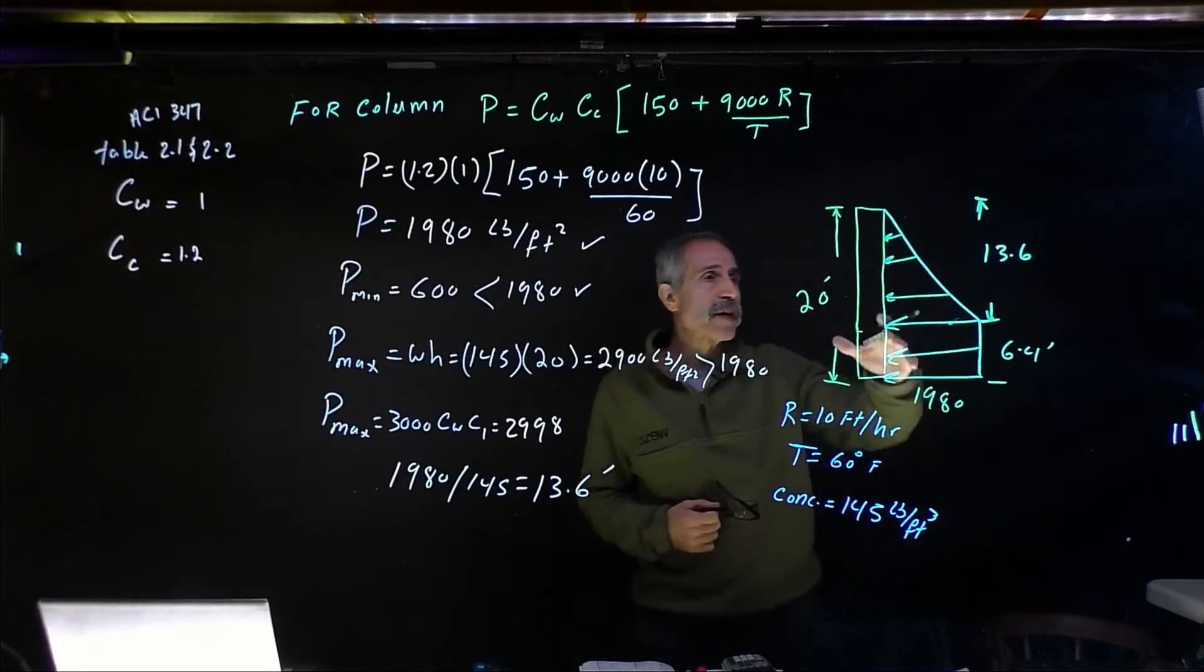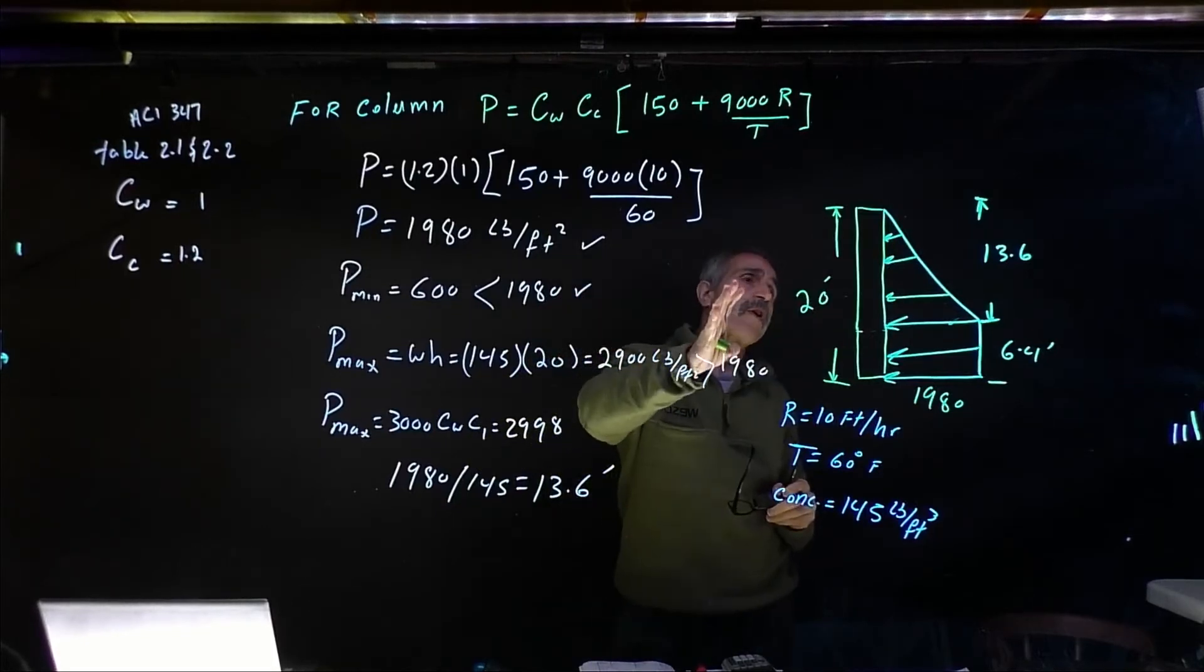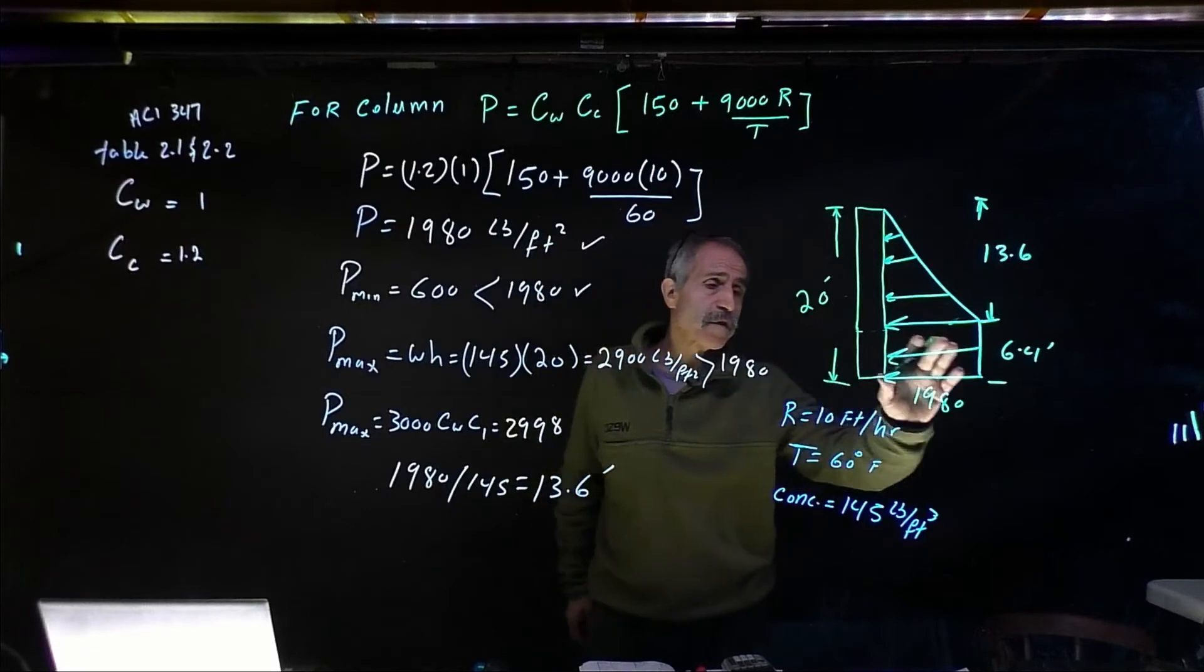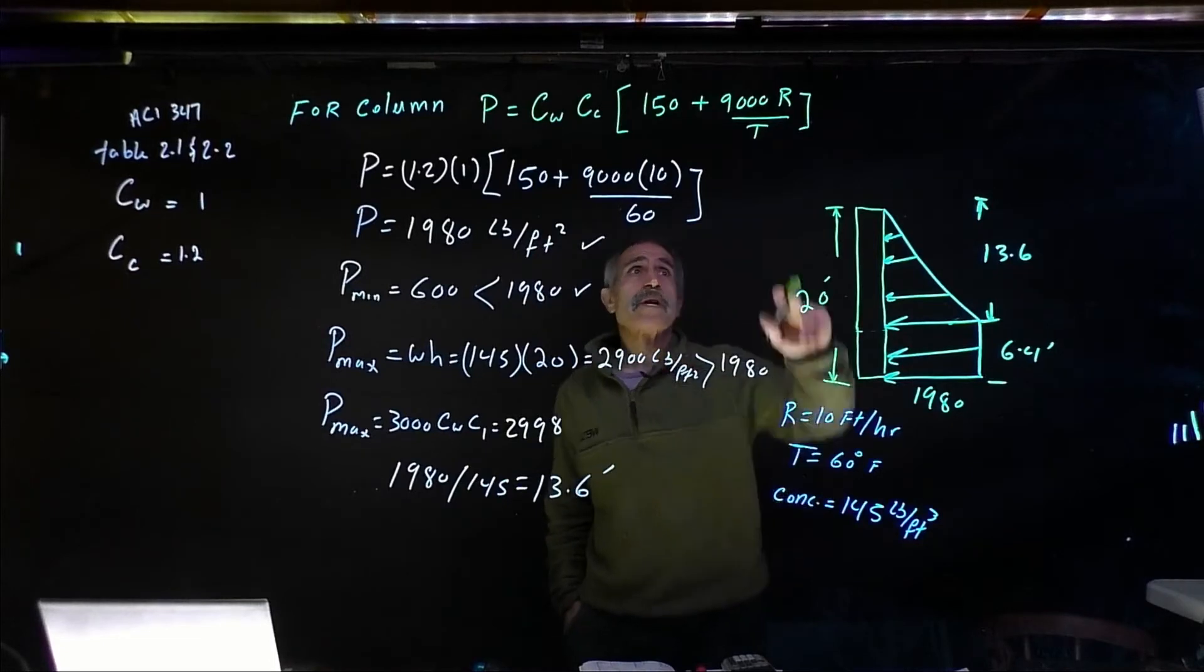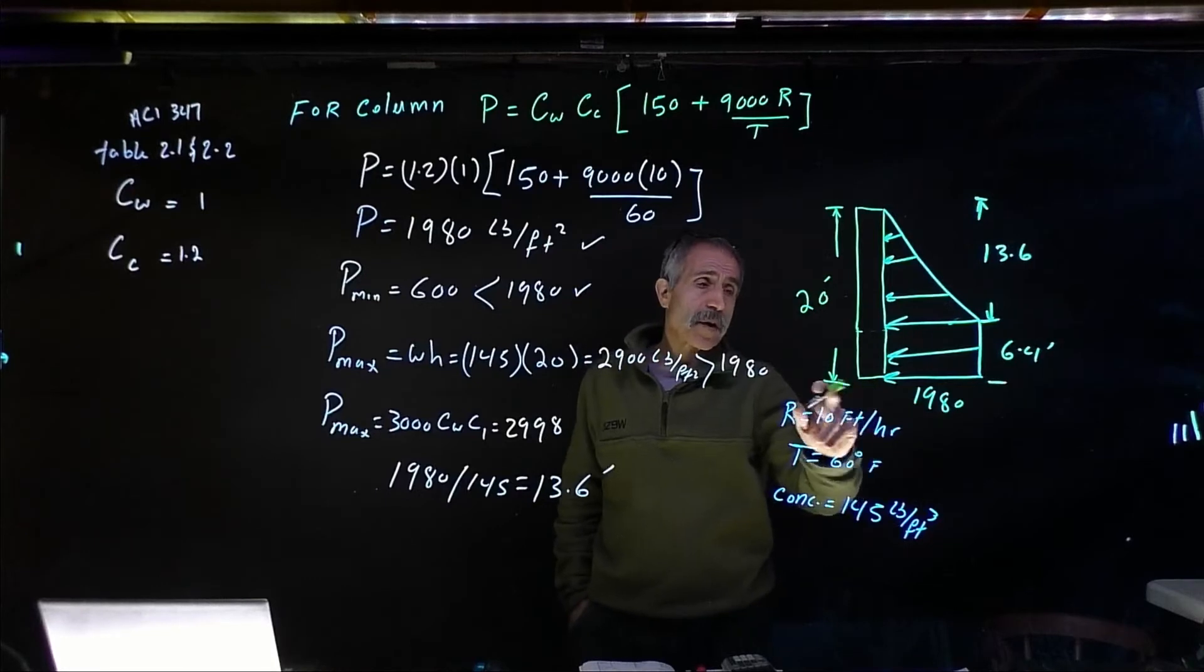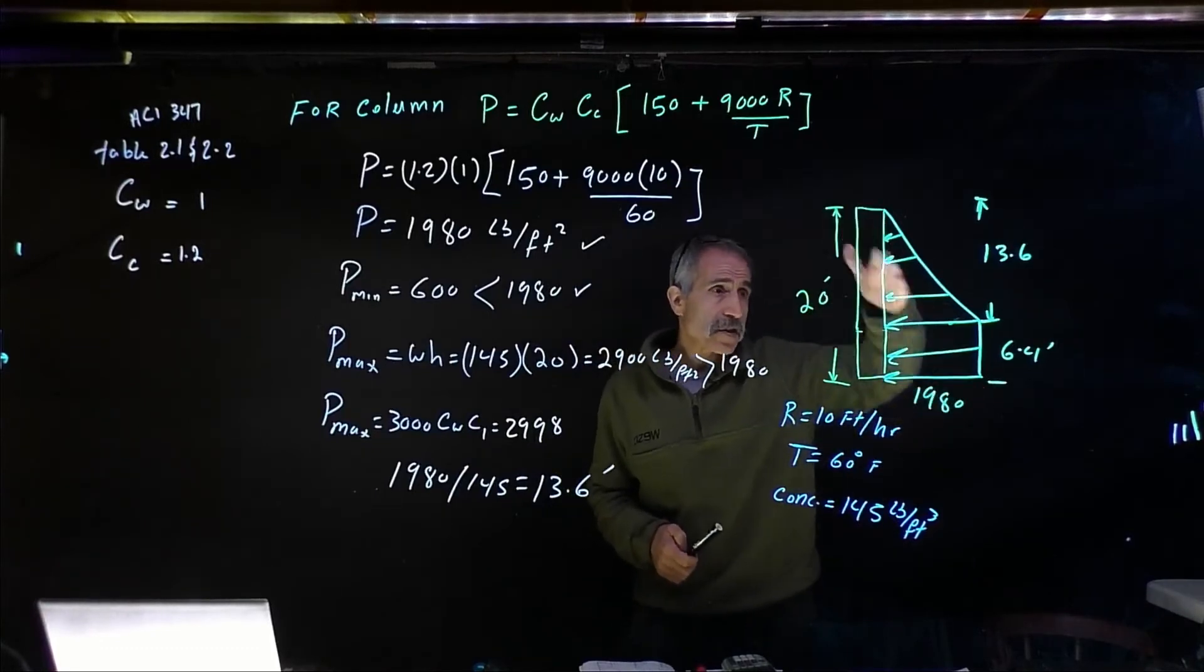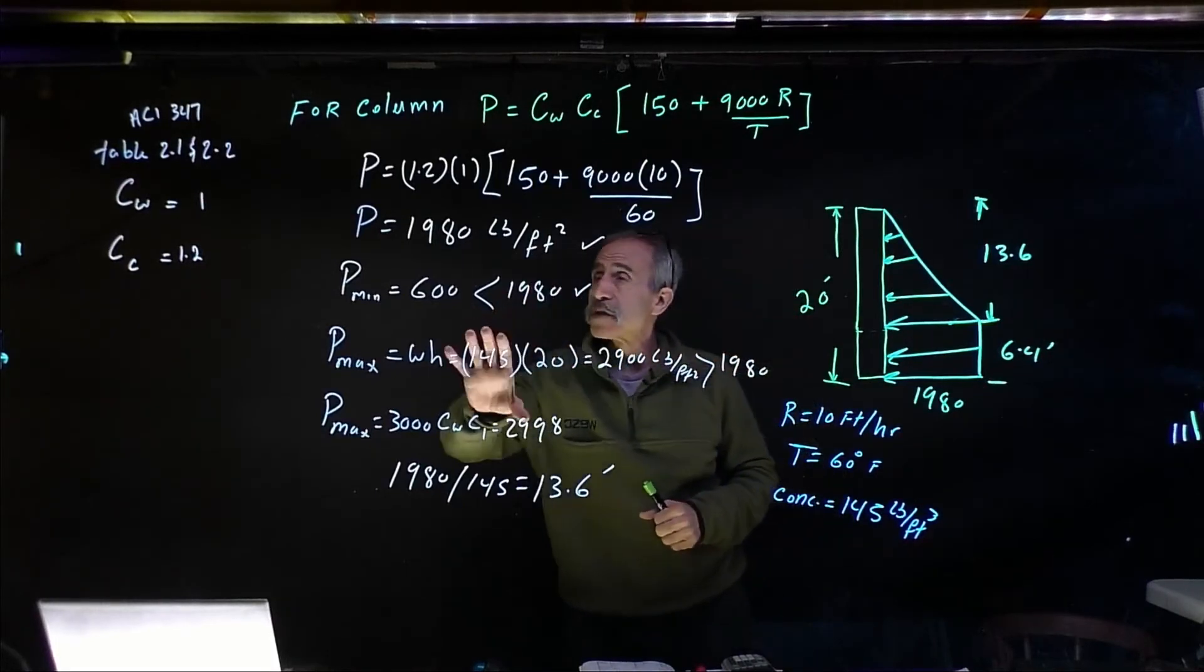So this is our pressure diagram, how we're going to calculate pressure for a 20-foot column. Now one thing you have to remember is that this is for a rate of 10 feet per hour. If you increase this rate to 20 feet per hour, your formula is going to change, your amount of pressure is going to change. However, because the rate is going to be higher, you might end up with a triangle pressure. So make sure you follow the code ACI 347.